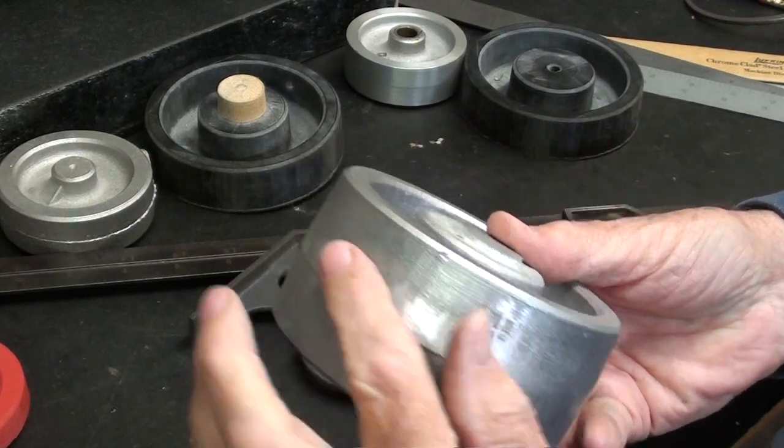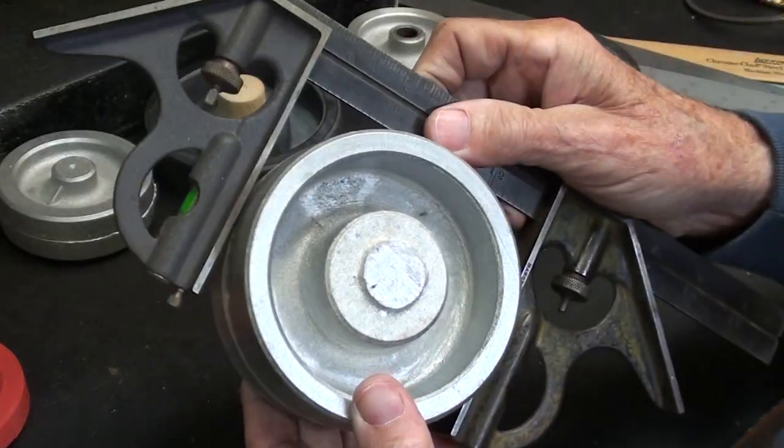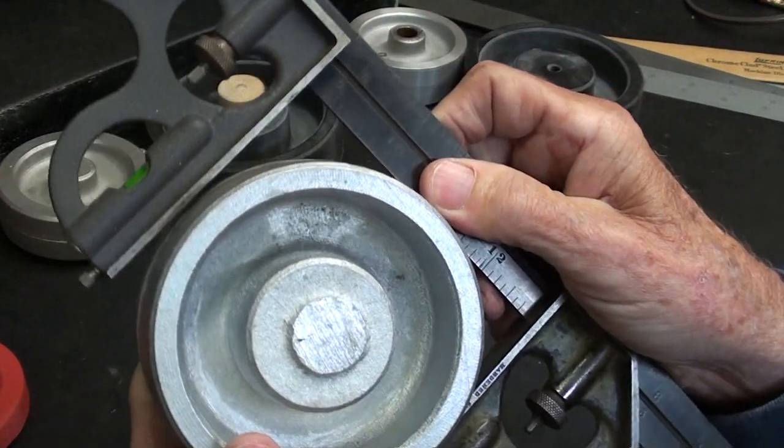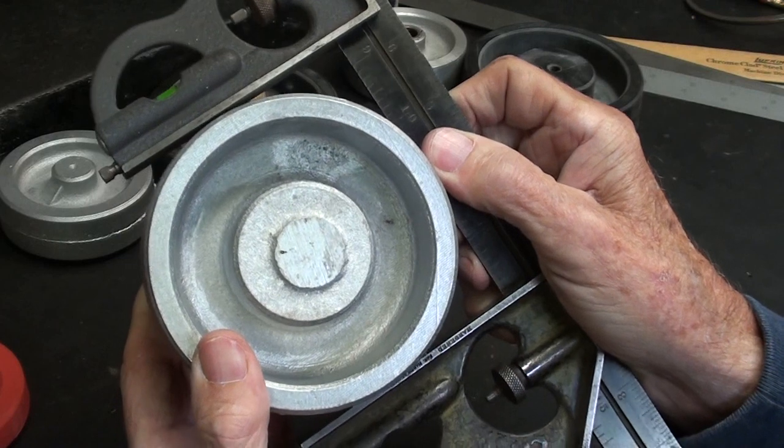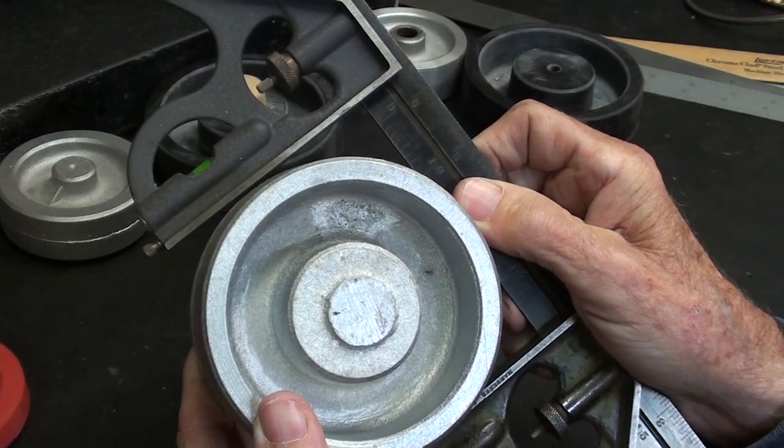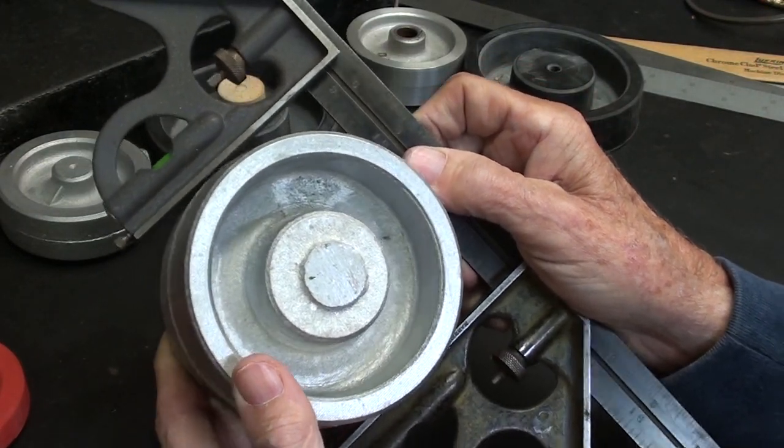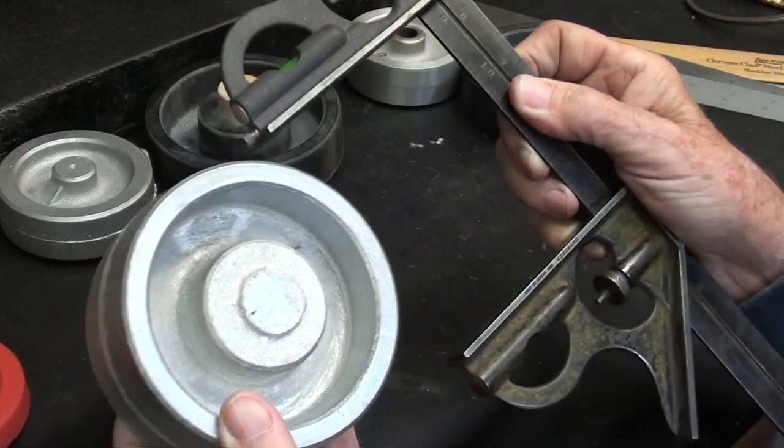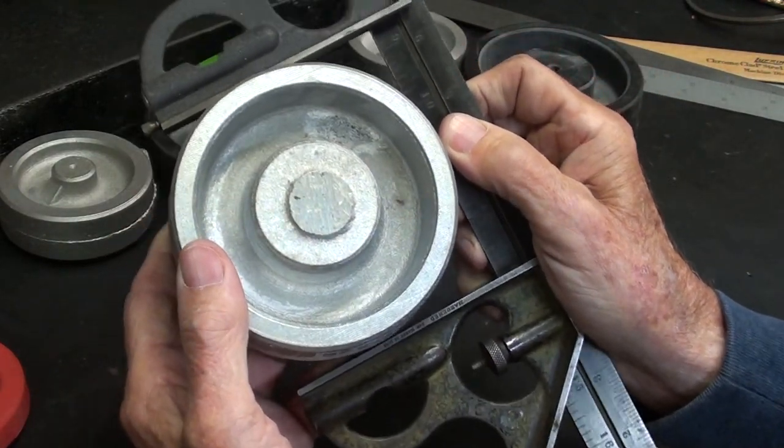But let's see what the difference is between the pattern and the casting. You can see here that it is considerable. Remember that shrink rate of 3/16ths is shrinkage per foot, and this is only like a 4 inch wheel or so. So, that's pretty interesting, isn't it?